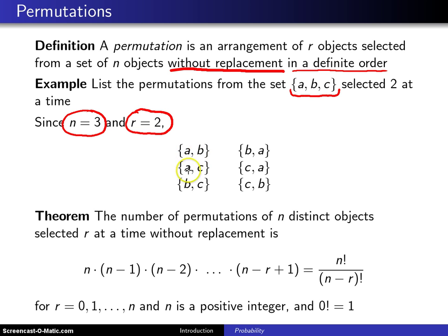So to list them out, we can go ab, ac, bc, and then since order is important, we can reverse each of those: ba, ca, and cb.